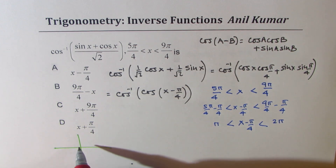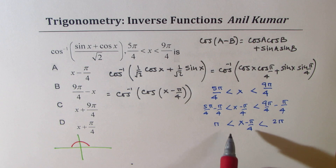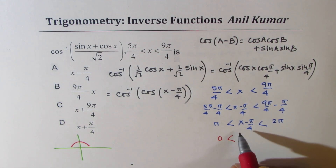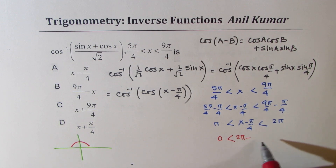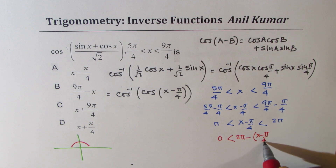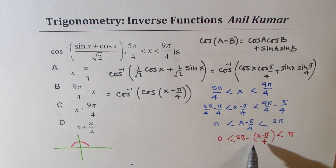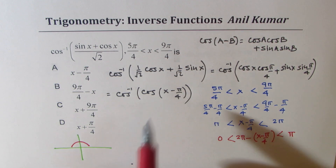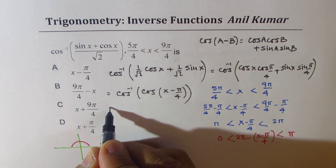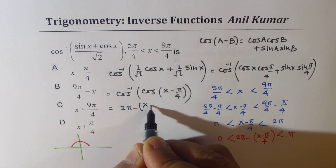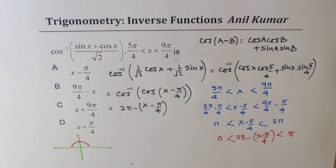For cos inverse we always take [0, π], not [π, 2π]. To convert this to the range [0, π], we take the angle away from 2π. So we get 2π − (x − π/4). This is a very critical step. The answer will not be x − π/4, but rather 2π − (x − π/4).